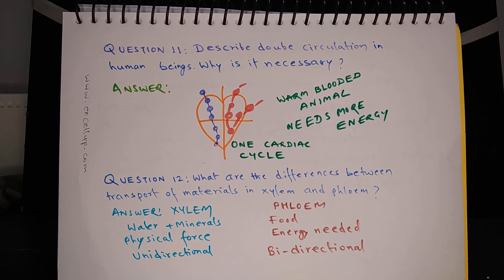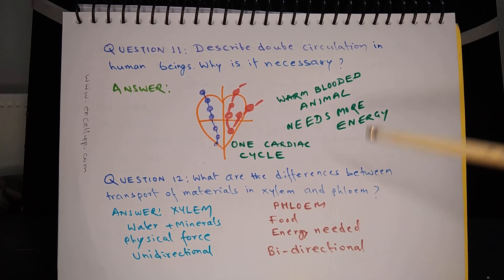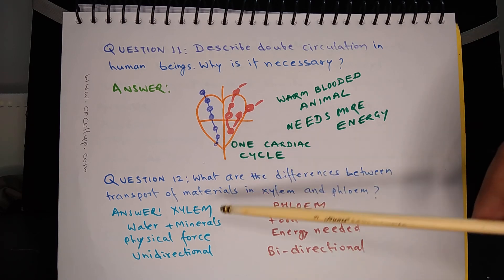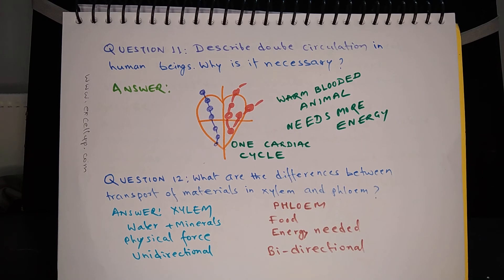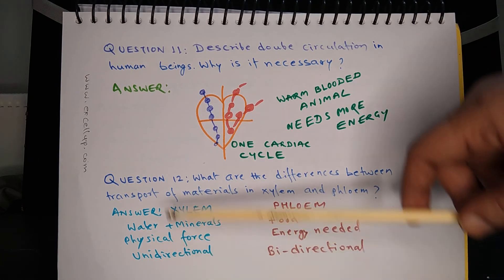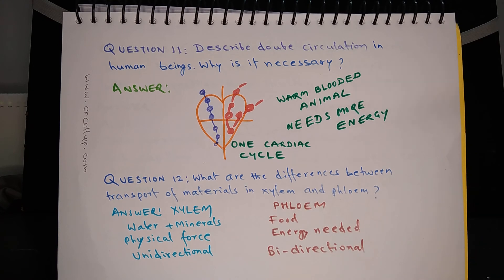Question 12: What are the differences between transport of materials in xylem and phloem? Xylem transports water and minerals, but phloem transports food. Transport through xylem happens because of physical forces like osmosis, diffusion, then capillary action where energy is not required. And the movement of substances through xylem is unidirectional, that is in one direction from roots to leaves. It does not take place in opposite direction.